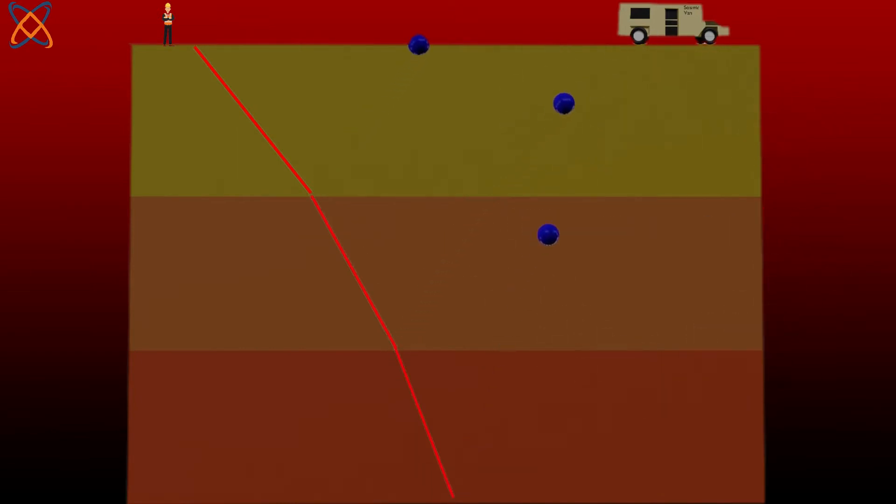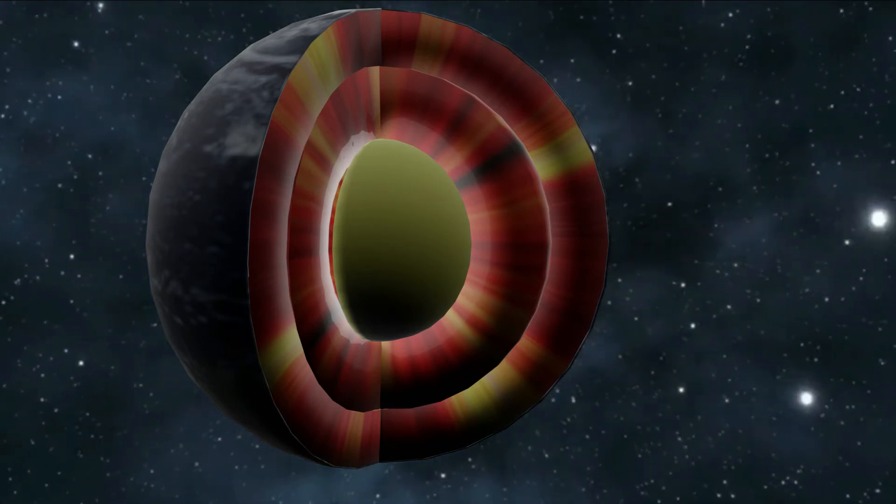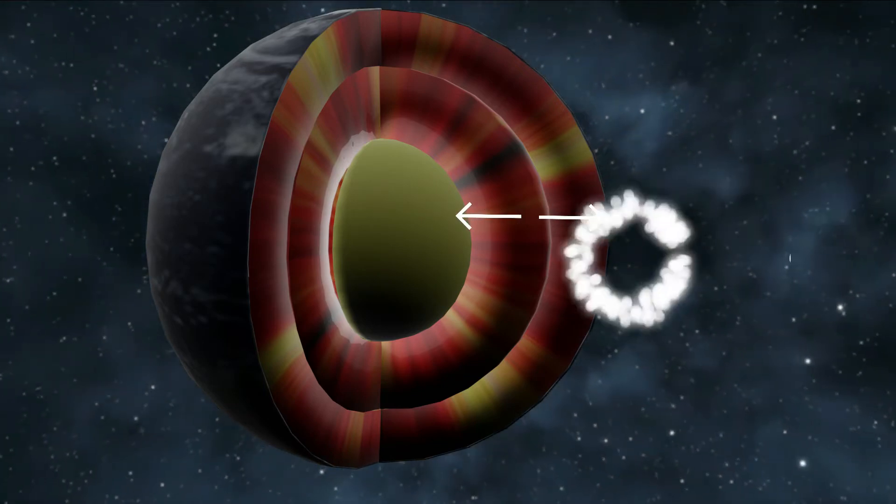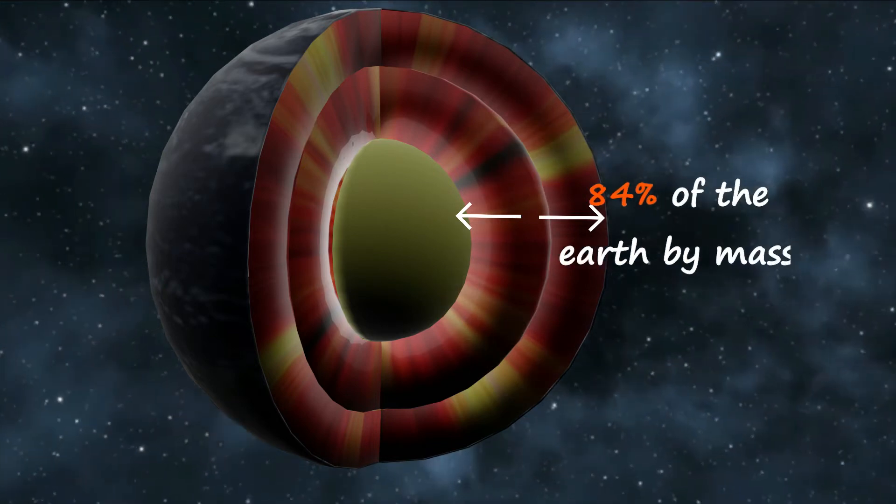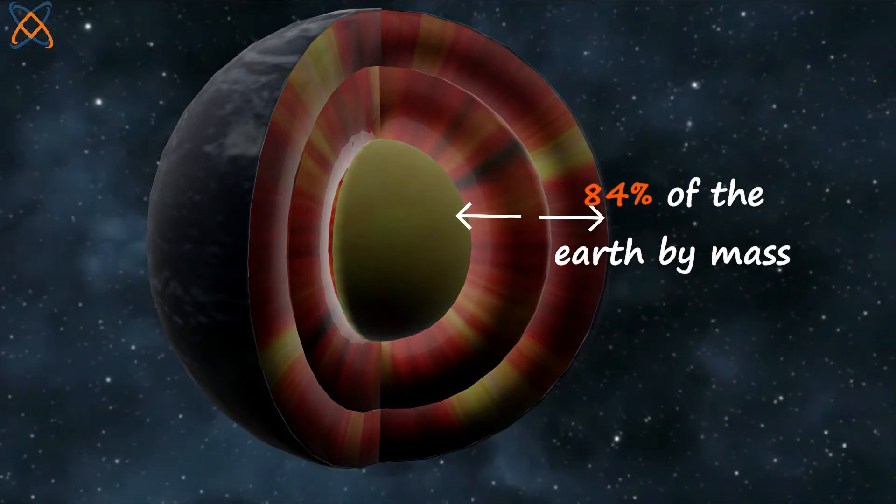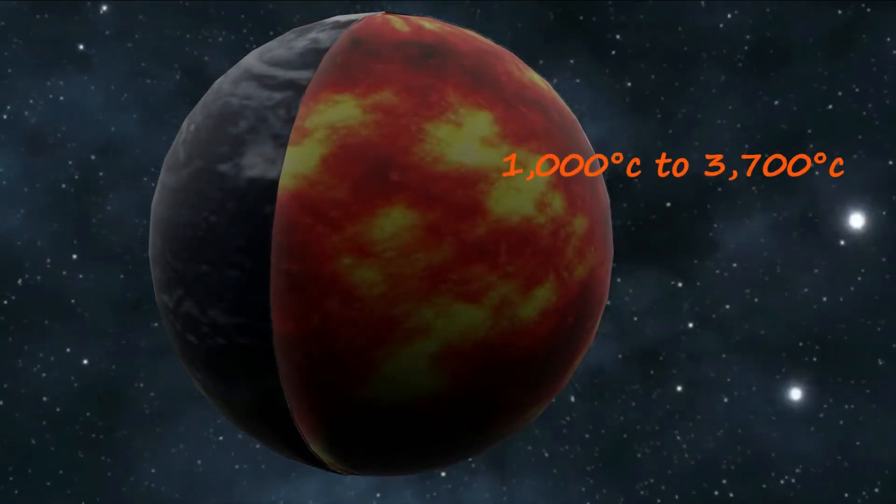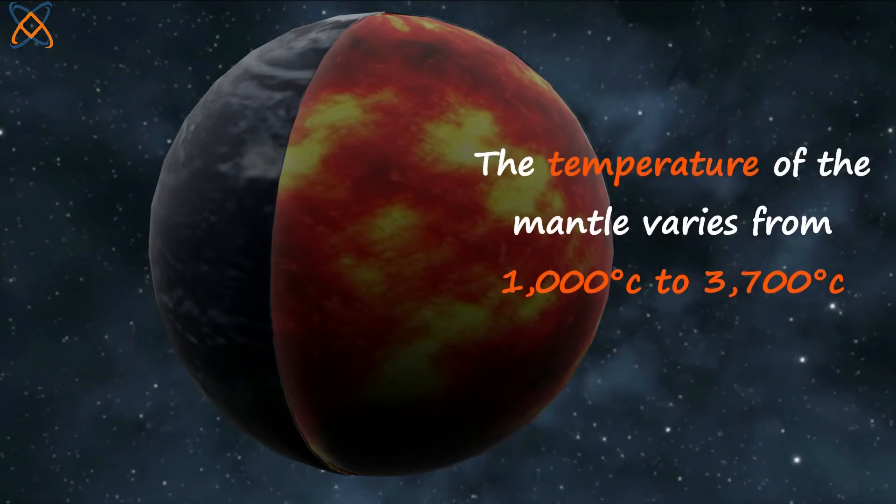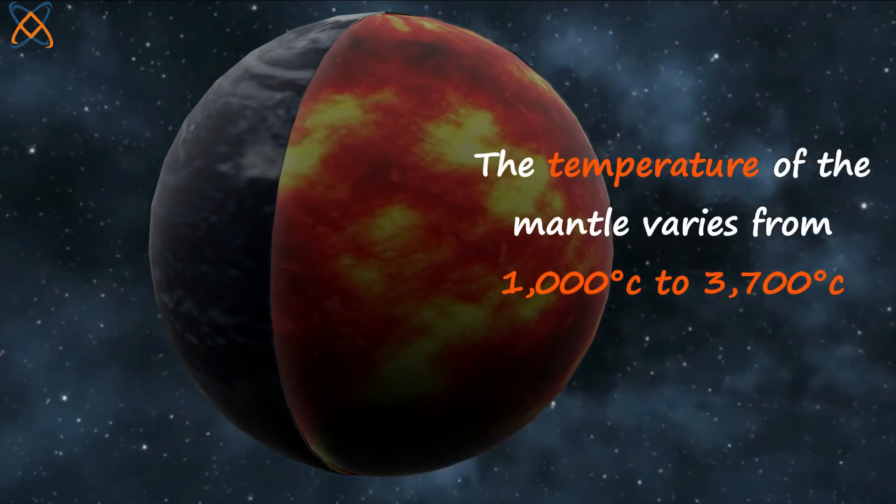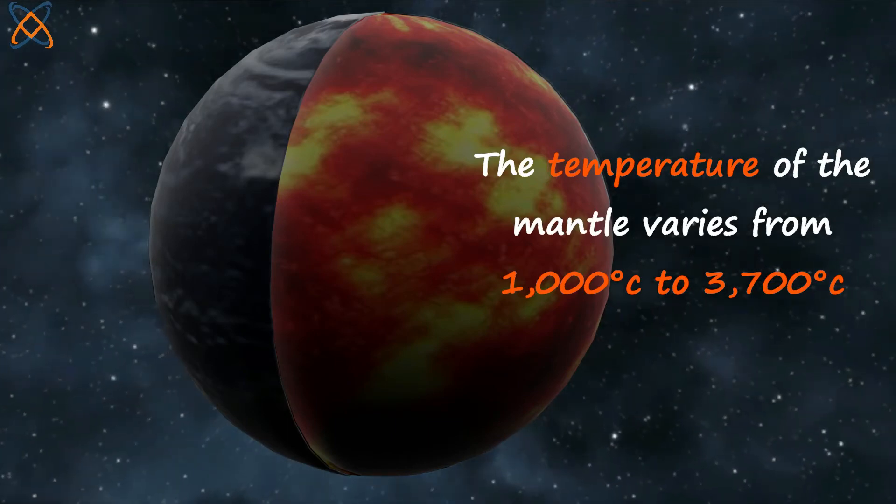The discontinuity is the depth at which there is an abrupt change in the velocity of these recorded signals. The Moho discontinuity defines the boundary between the Earth's crust and the mantle. The mantle is hot and represents about 84 percent of the Earth by mass. Of course, you know that the deeper you go, the hotter it becomes. The temperature of the mantle varies from 1000 degrees Celsius to 3700 degrees Celsius.